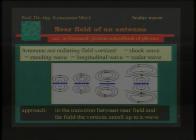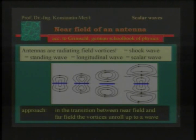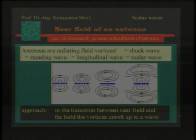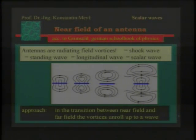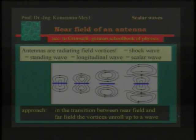But something happens between the so-called near field and the far field. In the far field — and that's not a very long distance, it's the wavelength divided by 2π, about divided by 6 — the longitudinal part of the wave is nearly zero, so it's negligible.